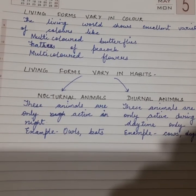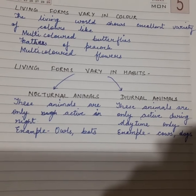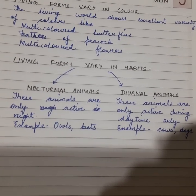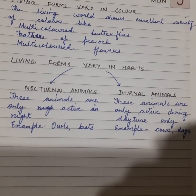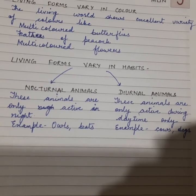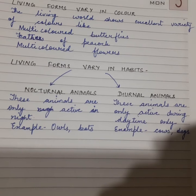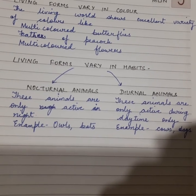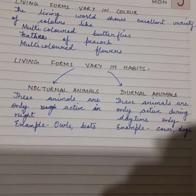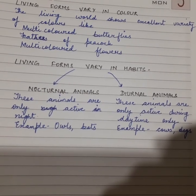Living forms vary in habits also. According to that, they are classified into two categories. First is nocturnal animals, and second is diurnal animals. Nocturnal animals are those that are only active at night. Examples: owls, bats. Diurnal animals are those that are only active during daytime. Examples: cows, dogs.